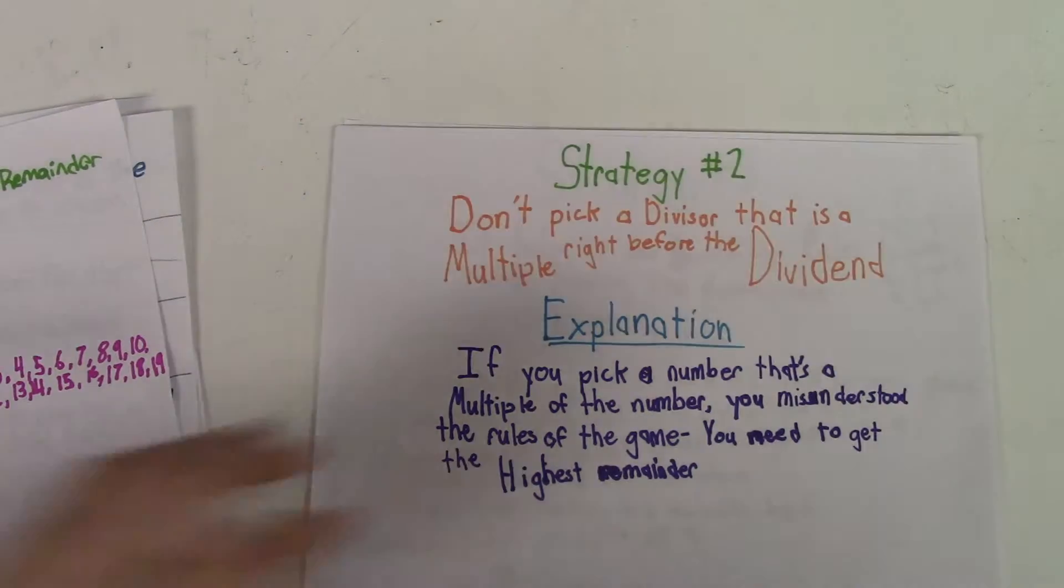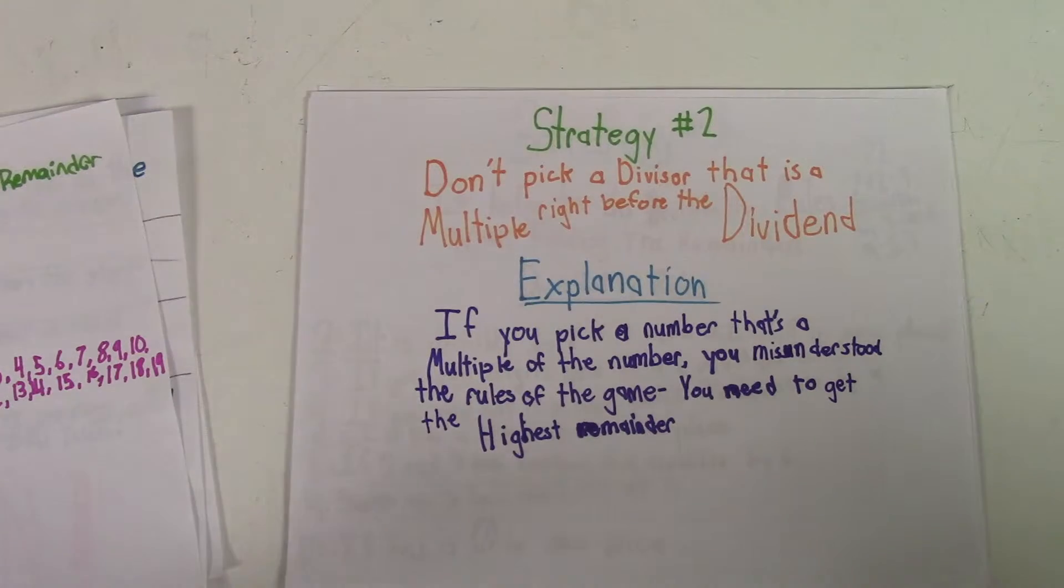Another strategy that you could use in this game is don't pick a divisor that is a multiple right before the dividend. If you pick a number that's a multiple of a number, you misunderstood the rules of the game. You need to get the highest remainder possible.